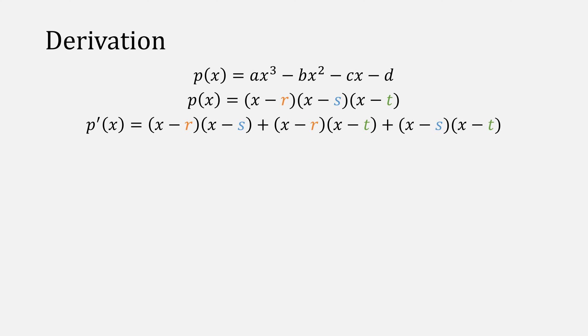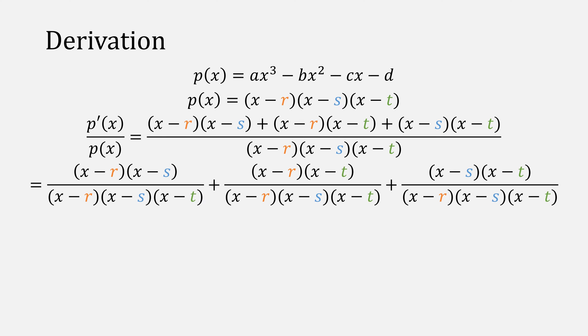Then find the derivative of that polynomial p prime. Afterwards, let's divide both sides by the original p. We can then expand that and simplify it to come up with this expression, which we can write more generally like this. Keep a pen in this, we'll come back to it.